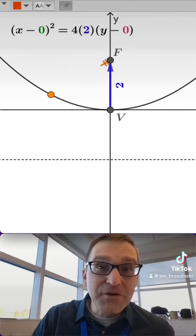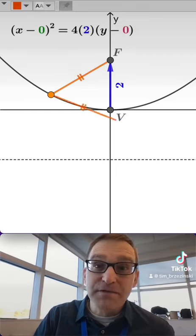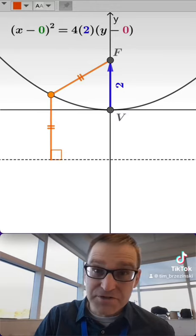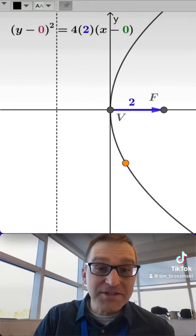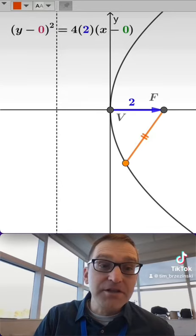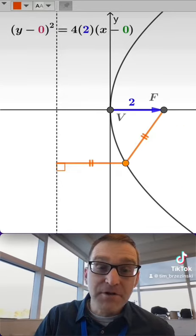It turns out that every point on that parabola is equidistant from the focus and the directrix, as you can see right there. Whether that parabola opens up or maybe sideways like this, every point on the parabola is always equidistant from focus and directrix, interestingly enough.